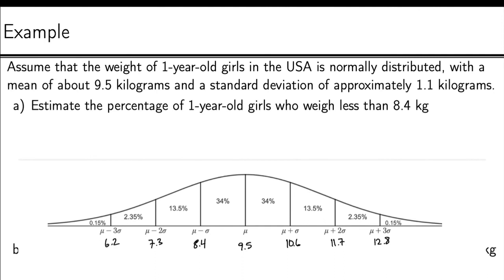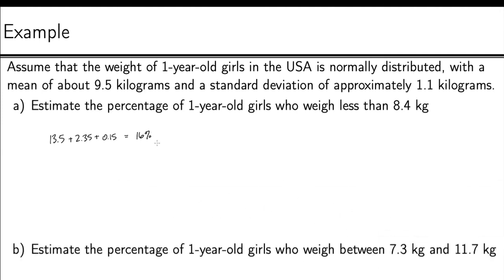Now, we care specifically about the percentage of one year olds who weigh less than 8.4 kilograms. So I go and I find my 8.4 kilograms and that's right here. And I'm looking for the percentage that's less than that. So from this marker right here, I then move and I add up all these percentages. 13.5 plus 2.35 plus 0.15. And I just add those up. And I end up with 16 percent. So 16 percent of one year old girls weigh less than 8.4 kilograms.